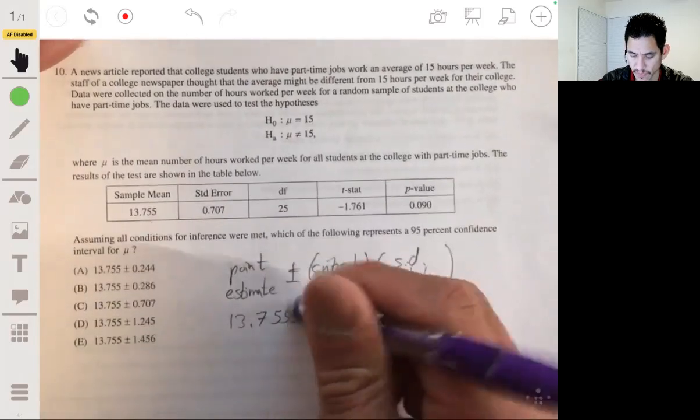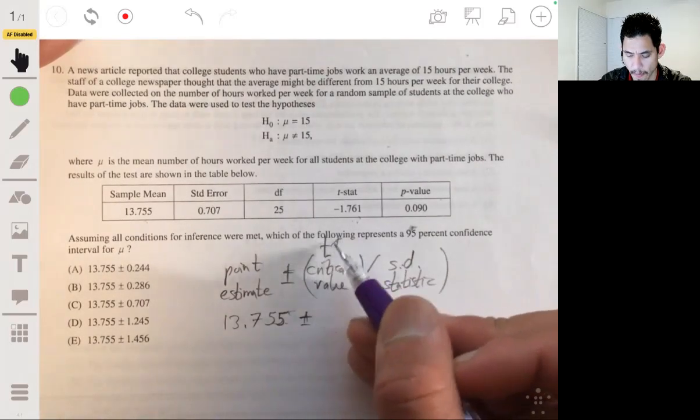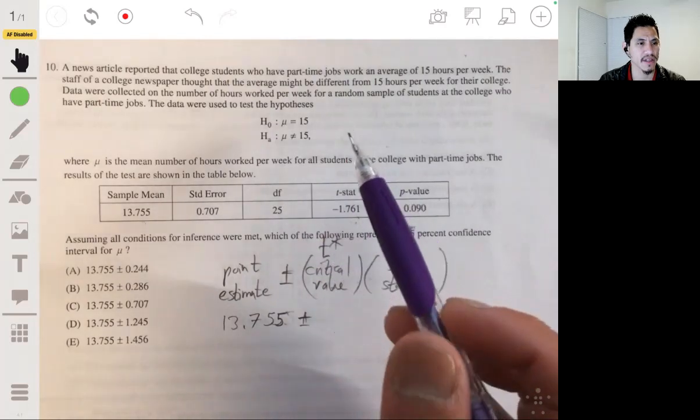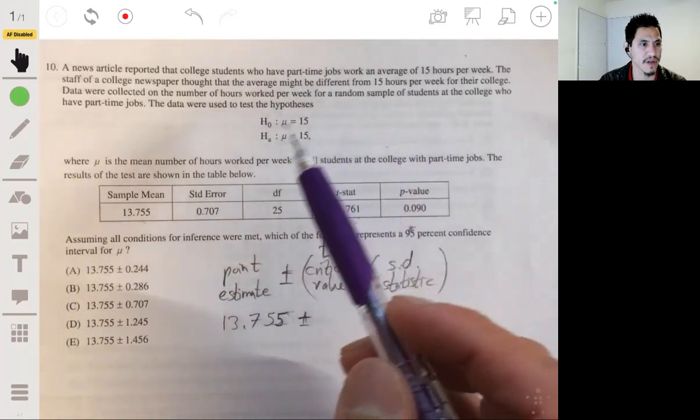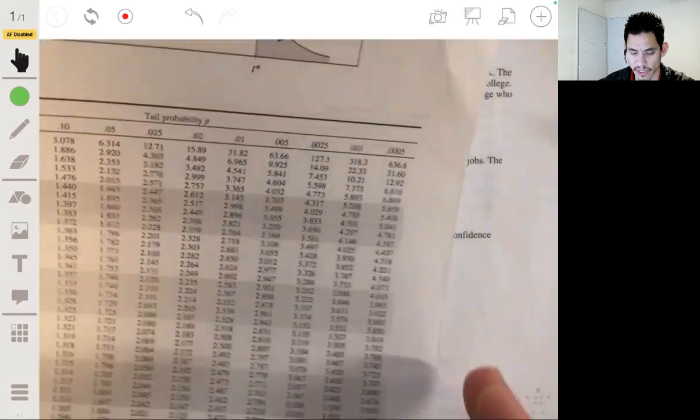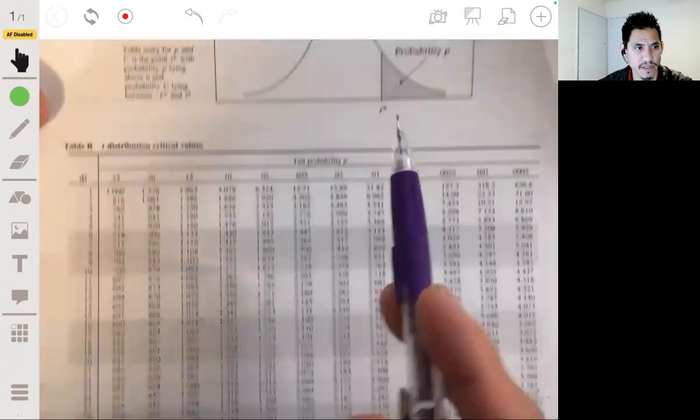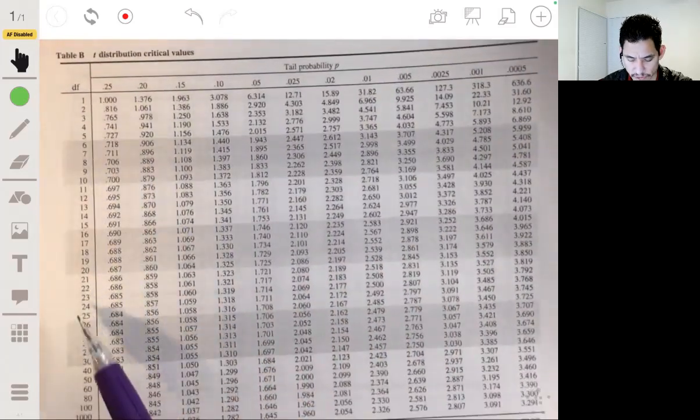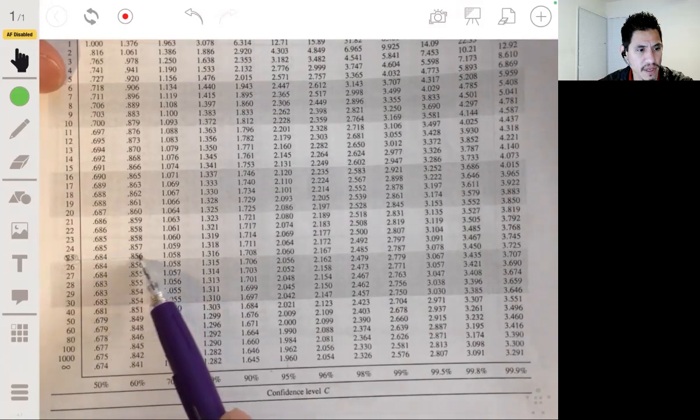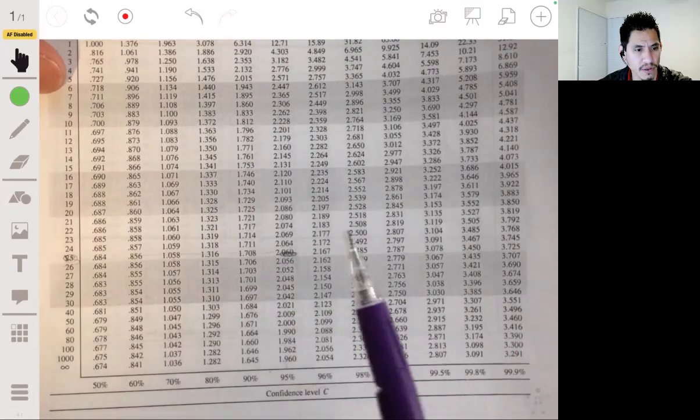In this case, our point estimate is the sample mean, 13.755. The critical value is our T star. And we get our T star by looking at the degrees of freedom we need and the confidence level we want to use. So we want to find a 95% confidence level. So let's look at our table. In your formula packet, you go to table B. Our T star. Go to the row with degrees of freedom 25 and confidence level 95%. So 25 aligned with 95. So our critical value is 2.060.